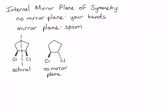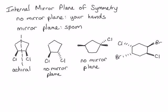What about this molecule? Pause the video for a moment and see if you can find a mirror plane of symmetry in it. Making this molecule with a modeling kit can be especially helpful in determining whether or not it contains a mirror plane of symmetry. This molecule does not contain a mirror plane of symmetry. What about this next molecule? Again, take a moment to pause the video. You may find it helpful to make a model. Hopefully you've been able to see that this molecule also does not contain a mirror plane of symmetry.